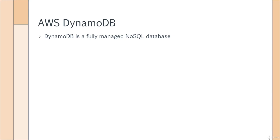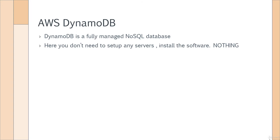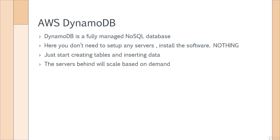Now we come to DynamoDB. DynamoDB is a fully managed NoSQL database provided by AWS. Here, you don't need to set up any servers, install any software, nothing at all — you just start creating the tables and inserting your data. The servers behind the DynamoDB tables are created automatically by AWS and scale based on demand. So if the number of queries or items being inserted starts increasing, the servers behind start scaling based on demand. This also depends upon something known as a throughput capacity, which we will be discussing in a later chapter. But just to make you understand — the entire infrastructure is still managed by AWS.